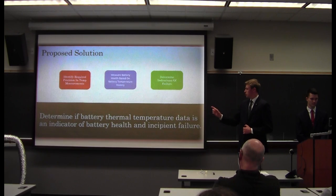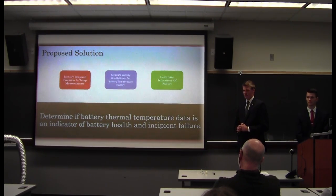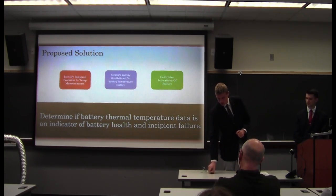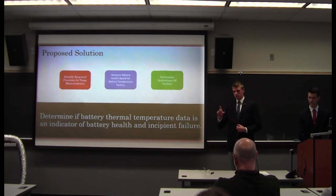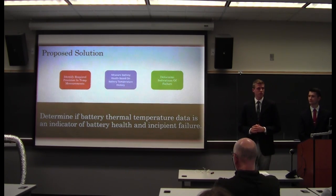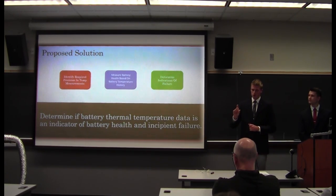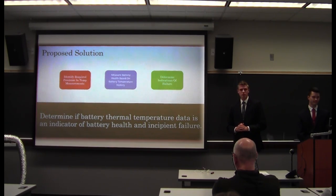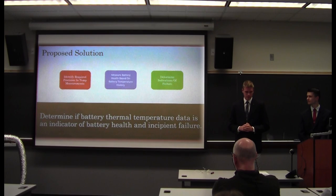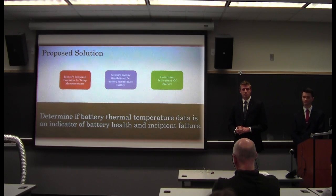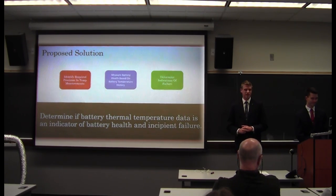Our approach to this problem is to determine if battery thermal temperature data is an indicator of battery health and incipient failure. The first objective that we used to approach this solution was to use a controlled heat source. Right here we built a controlled heat source that is able to, we call it a battery circuit, that we're able to take measurements of and determine the fidelity of our measurement equipment. In order to associate battery health with temperature history, we need to determine the best place to position our temperature collection devices. One temperature measurement could be used instead of all these other measurements and plugged into an algorithm that determines potential failure. Shane is now going to talk to us about the test cart setup we have.